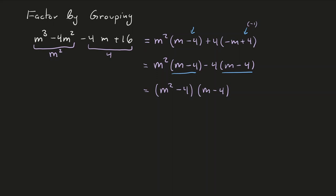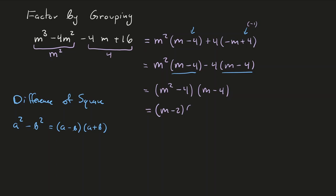This factors a lot more using the difference of squares. If you have something of the form a squared minus b squared, it factors as (a minus b)(a plus b). Here a is m and b is 2, since 2 squared is 4. So m squared minus 4 factors as (m minus 2)(m plus 2), giving us the completely factored form: (m minus 2)(m plus 2)(m minus 4).